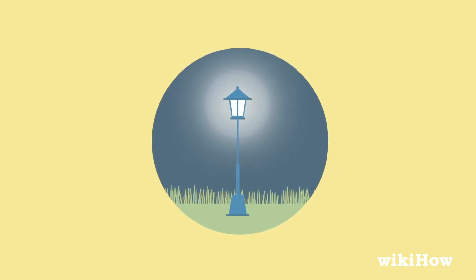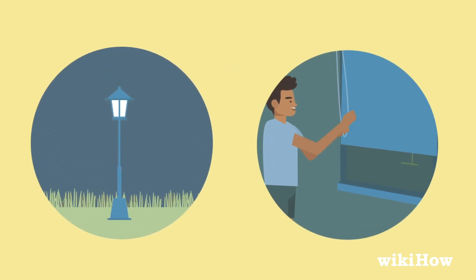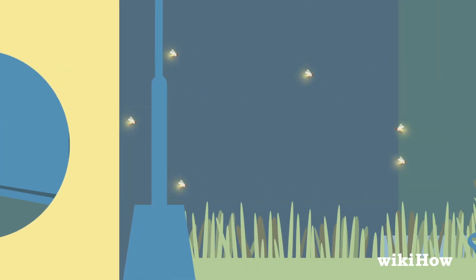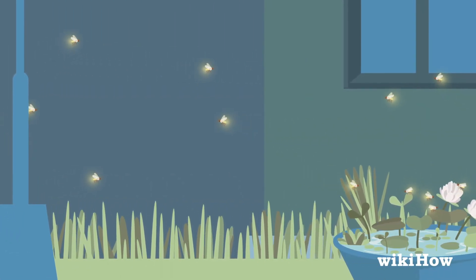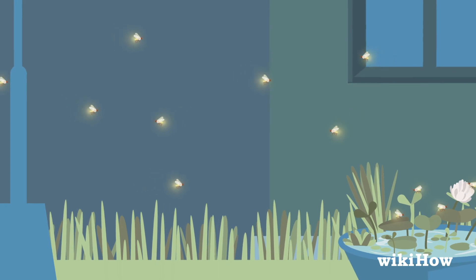At night, turn off any external lights and close your blinds. This will make it easier for the fireflies to see one another, and they'll be more active in your yard if it's dim.